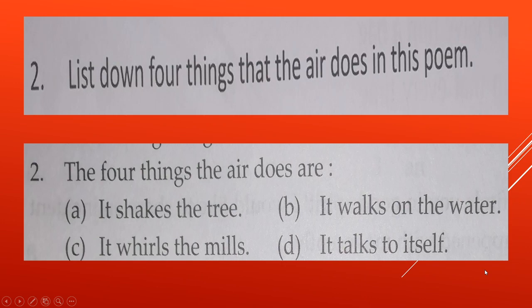Now see the second question. List down four things that the air does in the poem. The four things the air does are: it shakes the tree, it works on the water, it trails the mills.